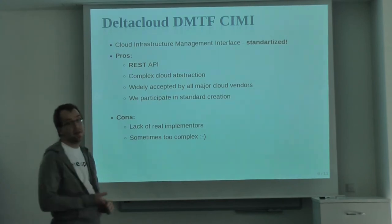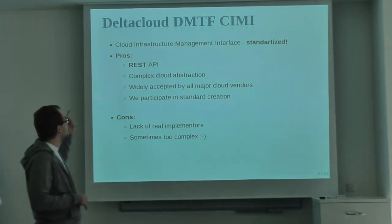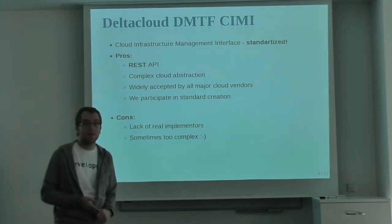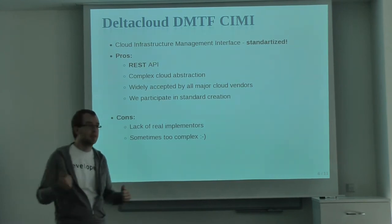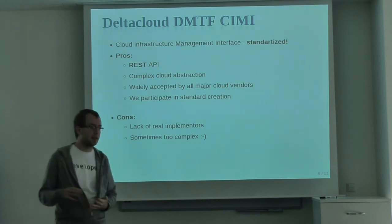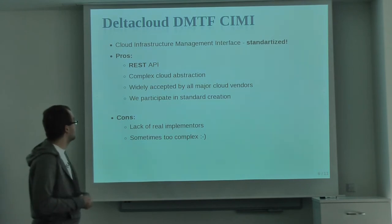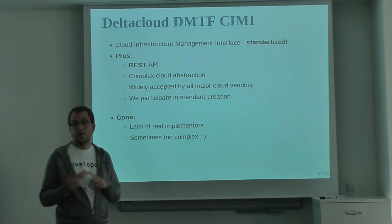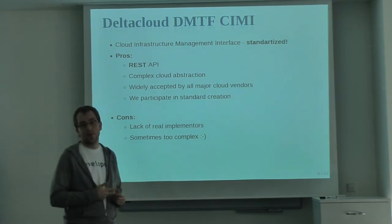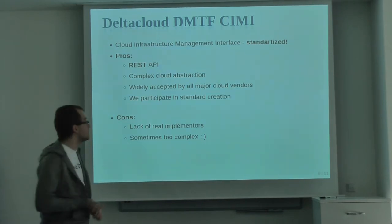Now the fun begins — DMTF CIMI. It's a new cloud standard. CIMI stands for Cloud Infrastructure Management Interface. It's REST-based and it's a very complex cloud abstraction, abstracting many entities including disks, volumes, machines, machine templates, networks, and network ports — around 100 entities in total. It's widely accepted by all major cloud vendors: VMware, Oracle, Red Hat, Microsoft, and others. We should expect them to start adopting this standard next year.